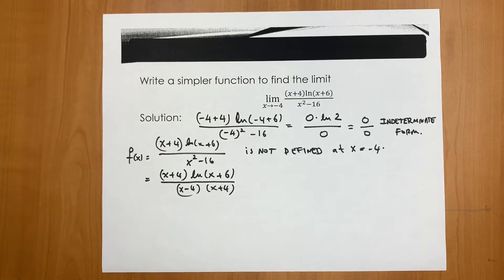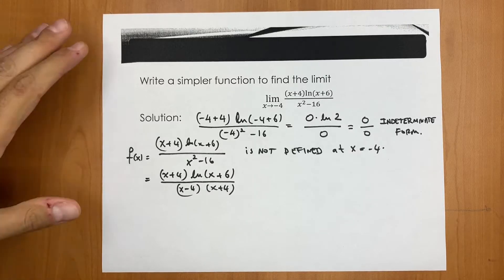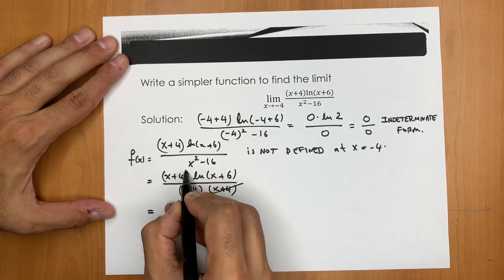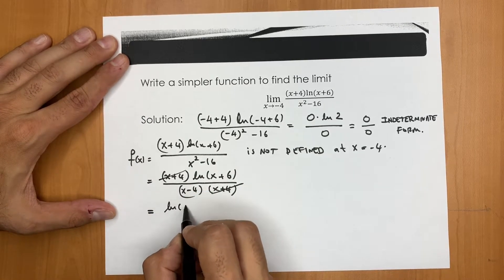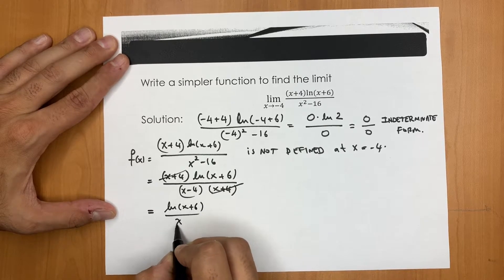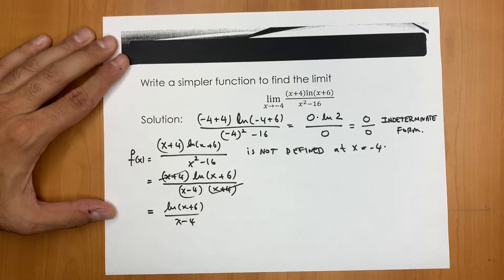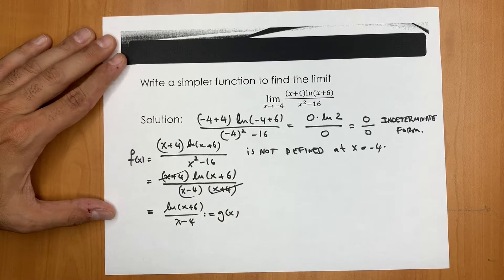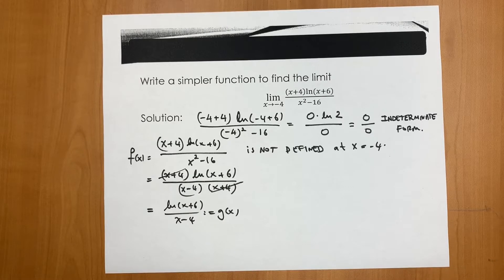And this is good news because at the top and the bottom you have exactly the same term x+4. So we can just say this function is equal to, after dividing out these factors, ln(x+6) over (x-4). I'm going to call this function g of x. So f is equal to g except...